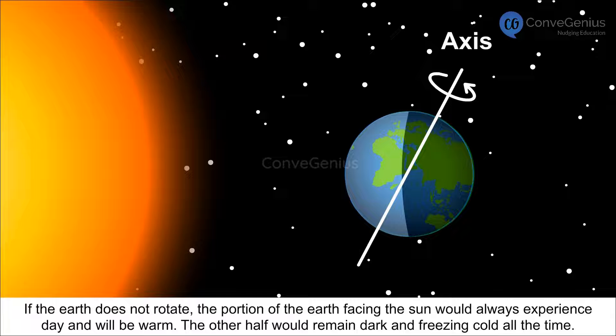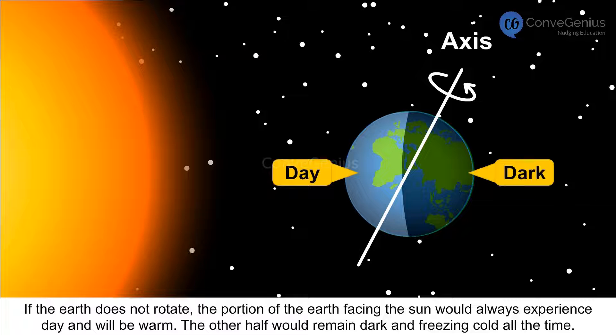If the Earth does not rotate, the portion of the Earth facing the Sun would always experience day and will be warm. The other half would remain dark and freezing cold all the time.